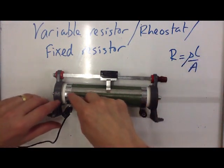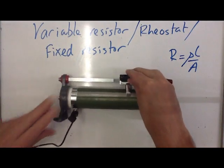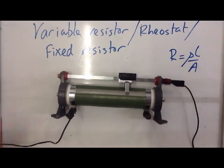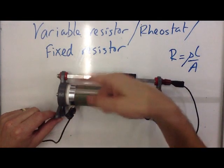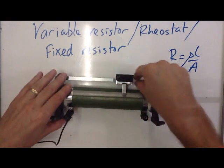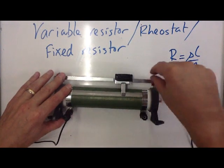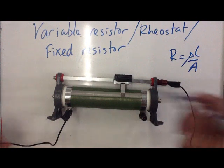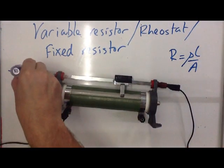I can adjust the length that the current has to go through very simply by sliding this dial up and down. To use this as a variable resistor, I connect the other terminals there. The current comes in, goes round and round, up through to here and through this very thick bar, which has a very high cross-sectional area, so very low resistance — it just comes straight out through the top. The symbol for a variable resistor is this, with the arrow through it.